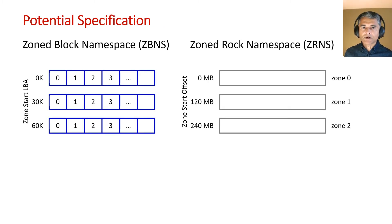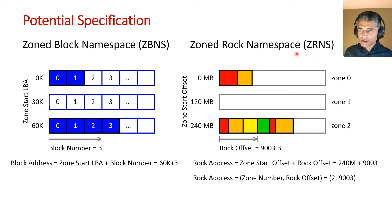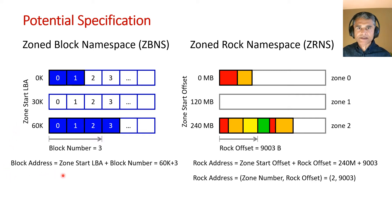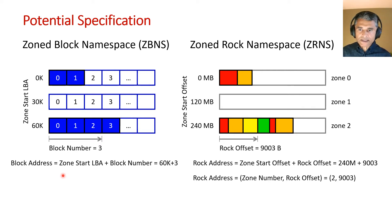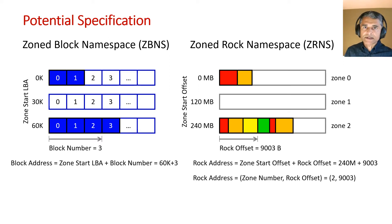One might think that rocks would complicate the specs, but really the specs for zoned rock namespaces, or ZRNs, could be very similar to that for ZBNs, as I've shown here — only the addressing is slightly different. In ZBNs, a zone is identified using its starting LBA and the block address is the sum of the zone start LBA and the block number within the zone. In ZRNs, a zone can be identified using its starting offset in bytes, and the rock address is the sum of the zone start offset and the rock offset within the zone. Another option is to create the rock address as a tuple of the zone number and the rock offset, which has somewhat cleaner semantics.